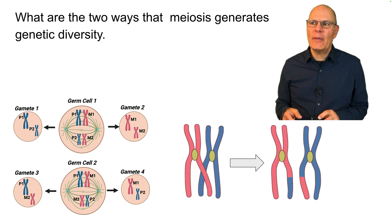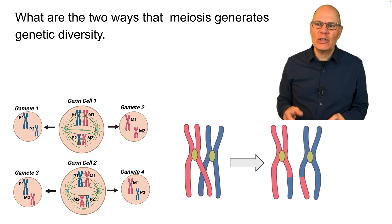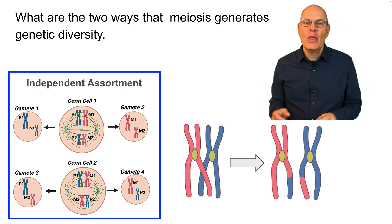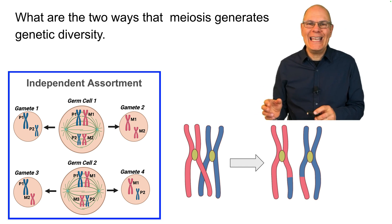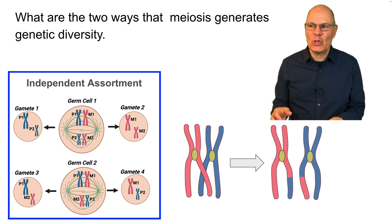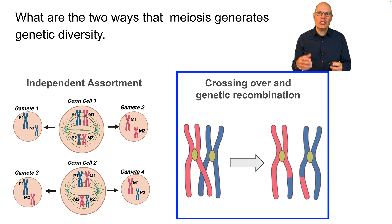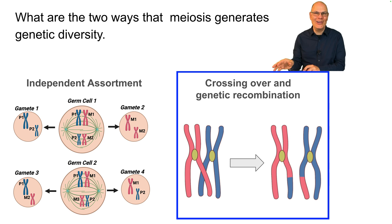What are the two ways that meiosis generates diversity? They're shown here. The first is independent assortment. The second is crossing over and genetic recombination. We'll explain both of those now.